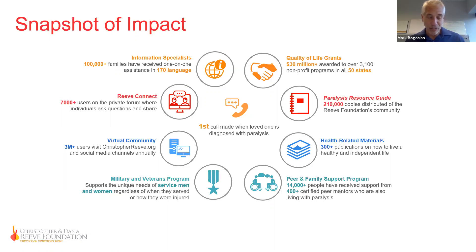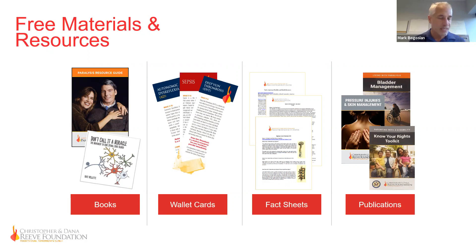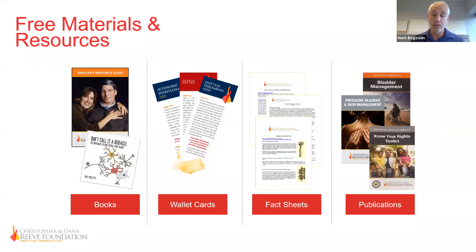The National PRC also offers free health-related resources and materials, including our flagship publication, the Paralysis Resource Guide, wallet cards on sepsis and deep vein thrombosis, publications on bladder and bowel management, pressure injuries, advocating for the rights of children living with paralysis, and state fact sheets. We invite all of you to reach out to us at any time for these materials, either for your own organizations or for the people that you serve.